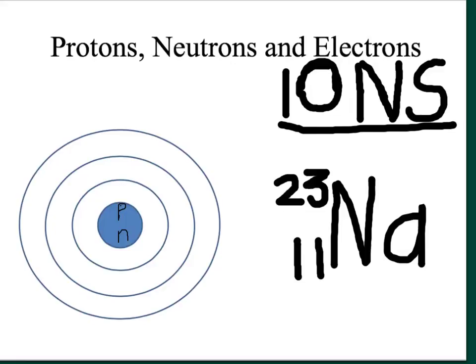And to work out the structure, draw the structure of a sodium ion, first of all we need to do the atom. So have a little think: how many protons, how many neutrons, and how many electrons are there in a sodium atom?